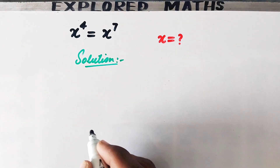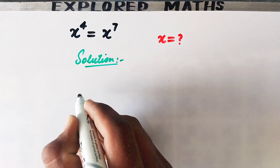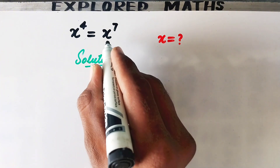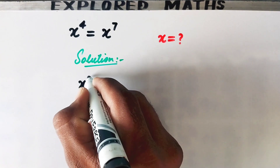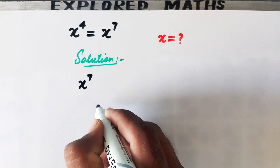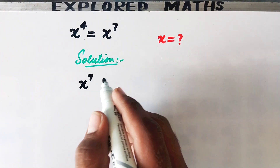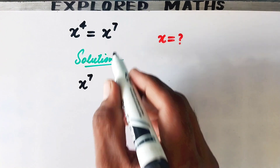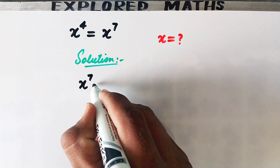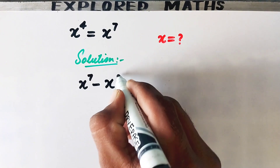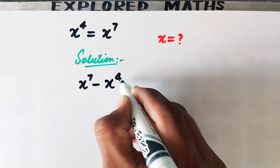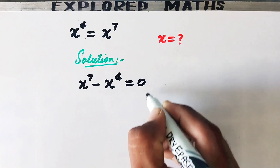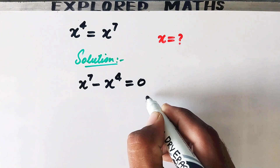In the first step we rearrange: we write x to the power 7 and take x to the power 4 to the right-hand side, giving us x to the power 7 minus x to the power 4 equal to 0.